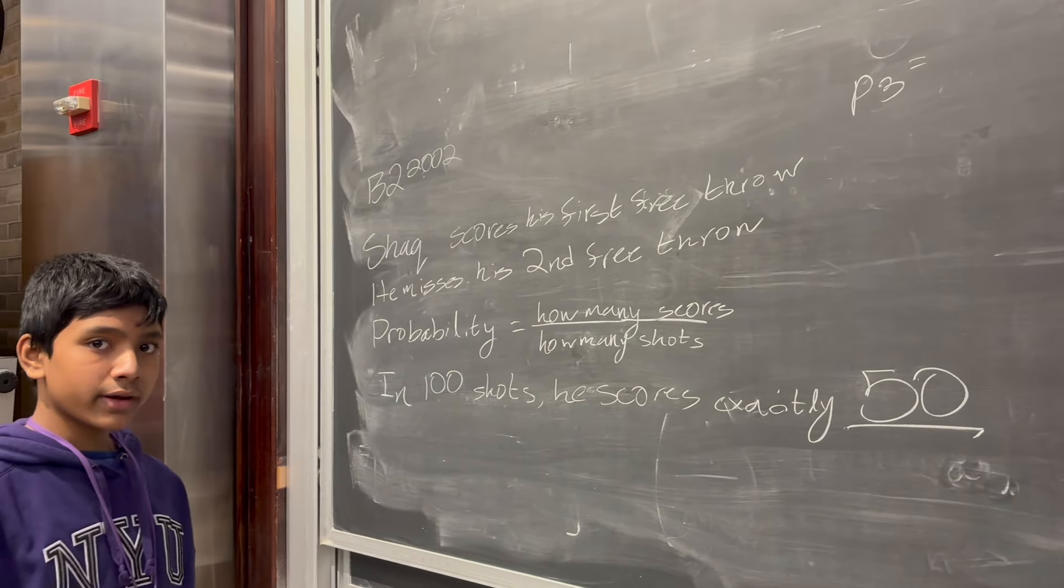let's start with the probability P3 of this guy scoring his third shot. How many scores has he had so far? Well, he scored his first one, but he misses his second one. So he's had two throws and he scored exactly one of them. So probability 3 is exactly one half.